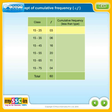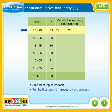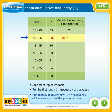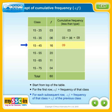To calculate less-than type cumulative frequency, we start from the top of the table. For the first row, cumulative frequency is equal to the frequency of that class. For each subsequent class, cumulative frequency is equal to the frequency of that class plus the cumulative frequency of the previous class.